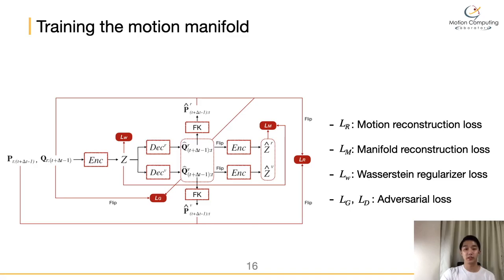Now let's see the training process of the motion manifold. We model a number of loss functions, each of which contributes to enhancing the quality of motion generated from the motion manifold from different perspectives. First, to reduce the reconstruction loss, we employ two kinds of loss functions: motion reconstruction loss and manifold reconstruction loss. Second, we include a Wasserstein loss that penalizes discrepancies between P_z and the distribution E_z produced by the encoder. Lastly, we include an adversarial loss L_g to achieve more natural motions from the motion manifold.